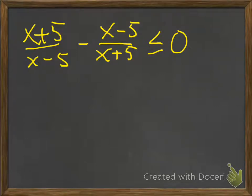We want to solve rational inequalities. We have this one: x plus 5 divided by x minus 5, minus x minus 5 divided by x plus 5, and that's less than or equal to 0.